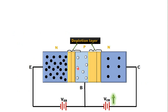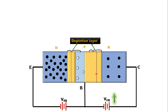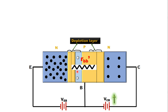Now we will see, with animation, how increasing the collector-to-base voltage increases the depletion layer, and how the resistance of the base region increases with the increase in depletion layer width. When we increase the value of collector-to-base voltage, the depletion layer width increases like this, and the resulting resistance of the base region is called base spreading resistance RBB'.